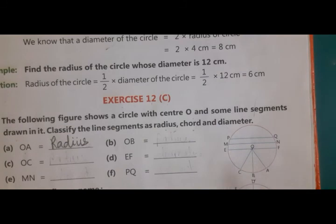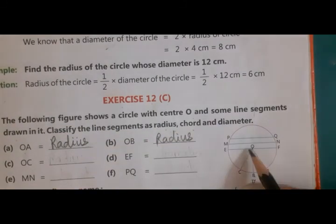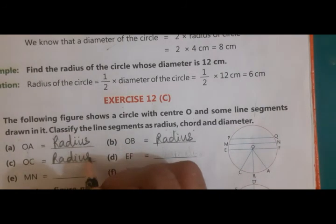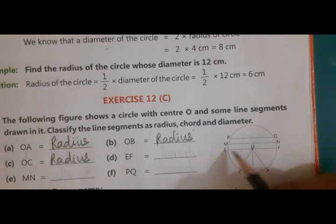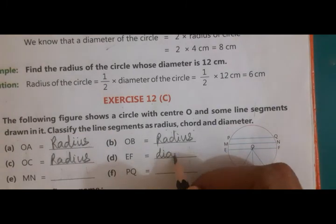OB is also a radius because it is passing from the center. OC is also a radius. EF, see EF is passing from the center, right? So it is a diameter.